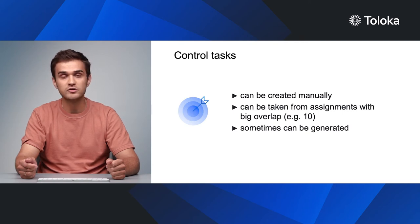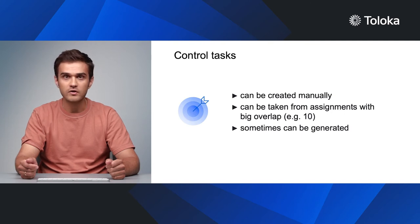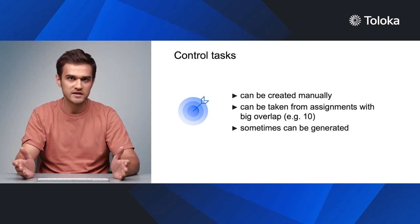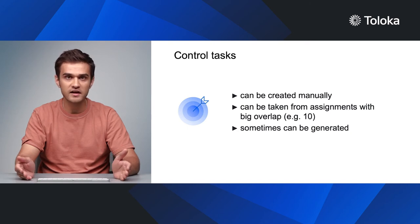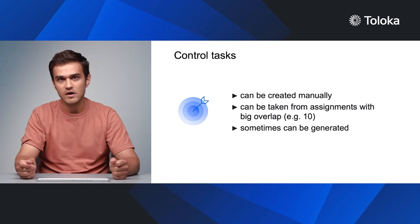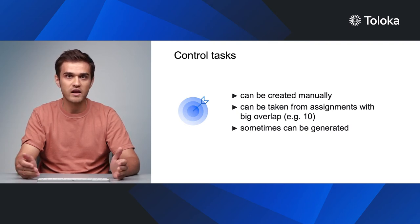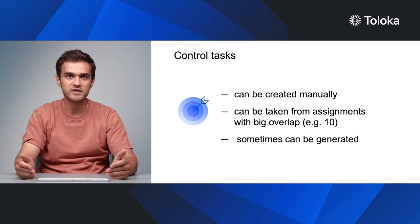There are several ways to prepare a control task. They can be created manually using a paid contractor or a group of trusted participants working outside the crowdsourcing platform, such as your content managers. Control tasks can also be taken from assignments evaluated using an overlap check that received a clear-cut assessment. Or you can run a special pool to collect control tasks with a large overlap, for example 10, to be certain of their quality. In certain cases, you can generate control tasks automatically. For example, if a project involves comparing web documents, you can generate screenshots containing an error, and the answer will obviously be 'error in document'. Of course, projects don't always allow for control tasks to be generated in this way.